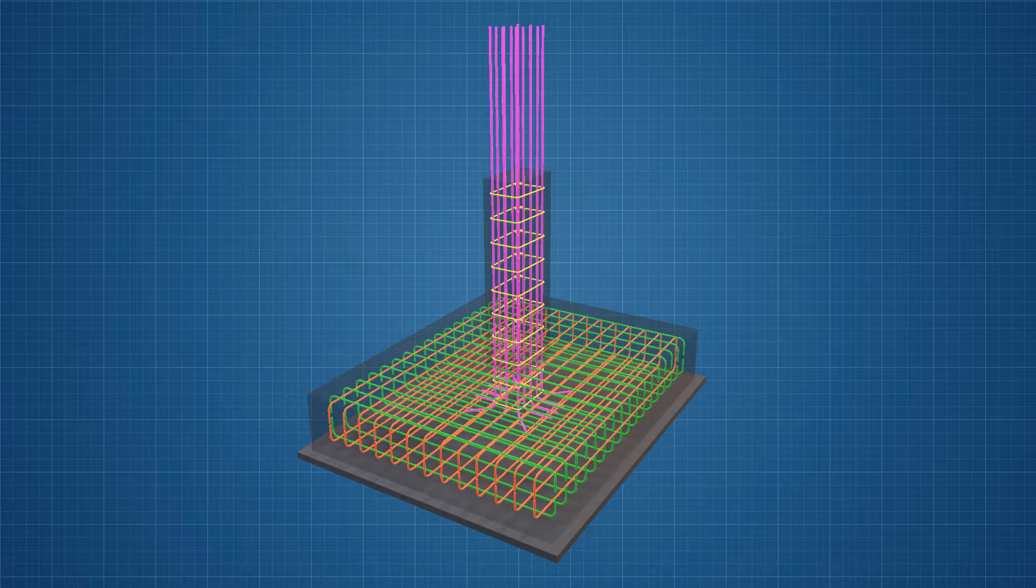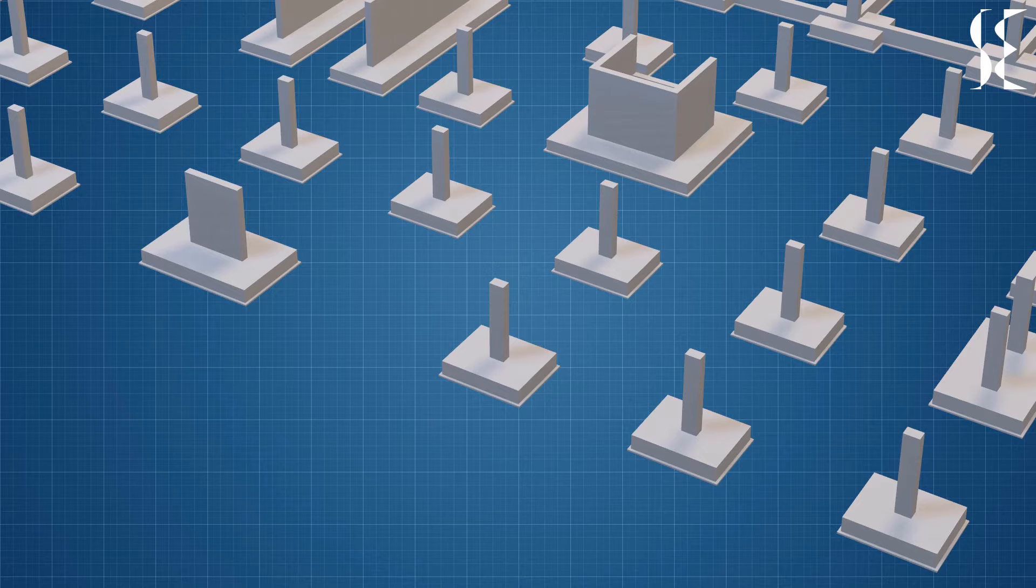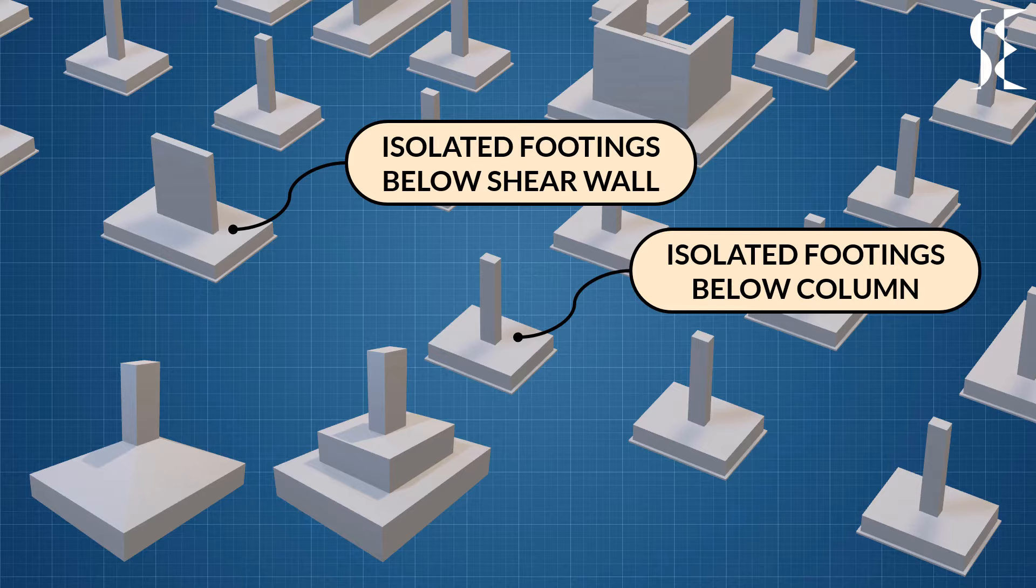Isolated footings are a type of shallow foundations which are provided under each column or shear wall individually. Isolated footings can be sloped or in steps as per design or construction requirements but reinforcement detailing is more or less same in each kind.